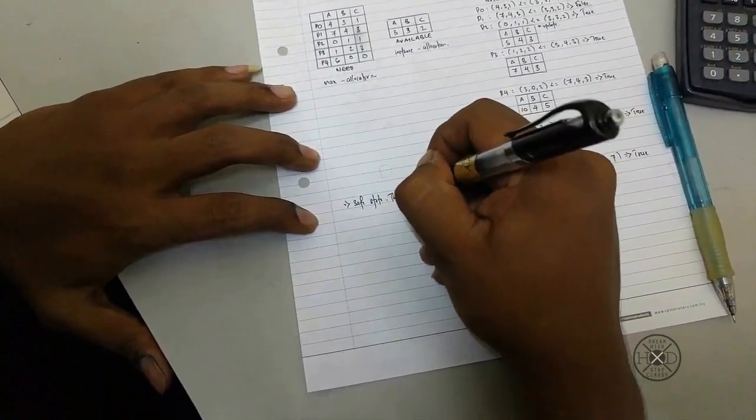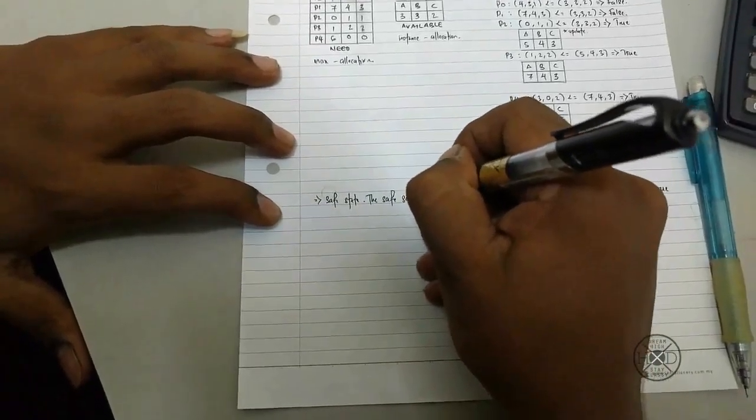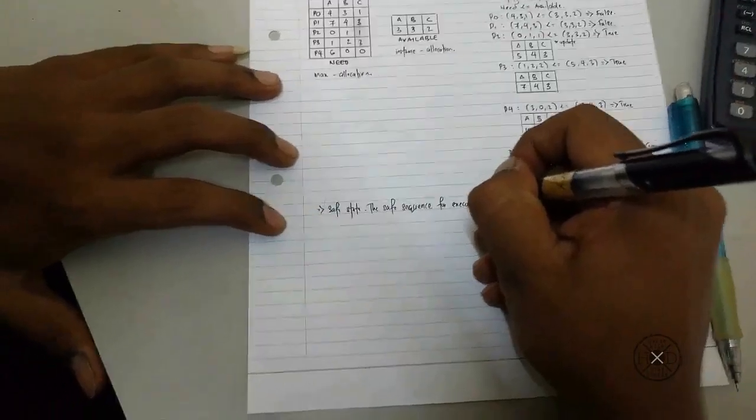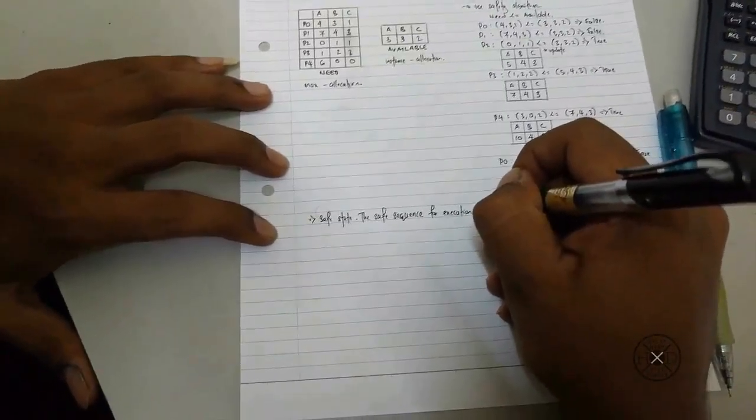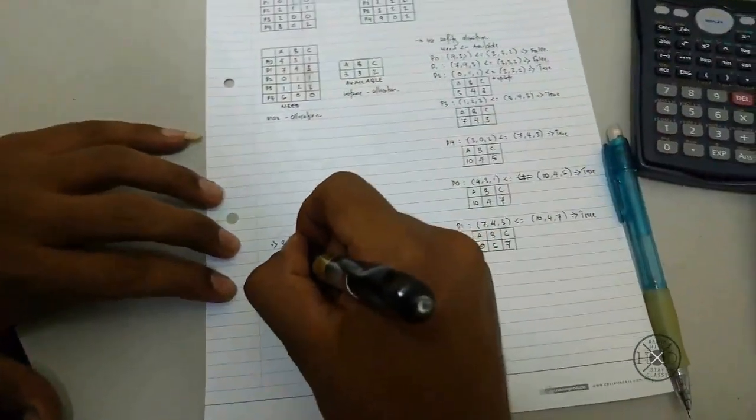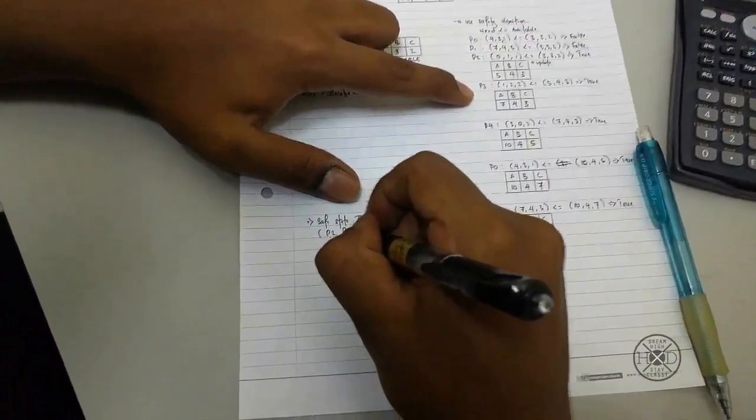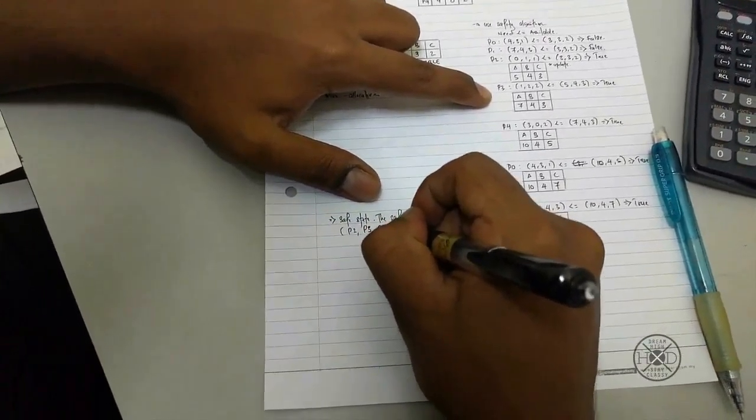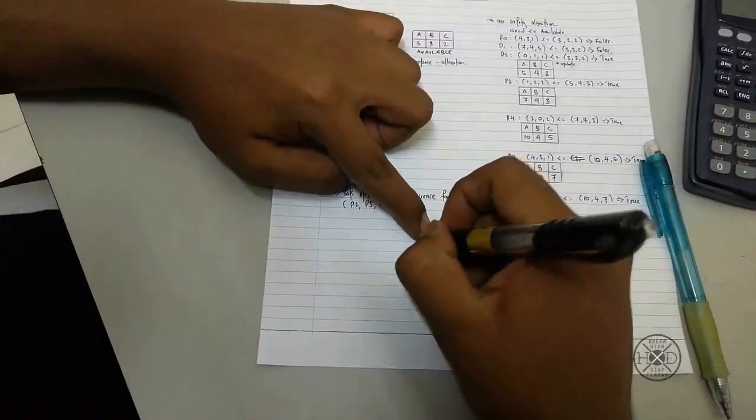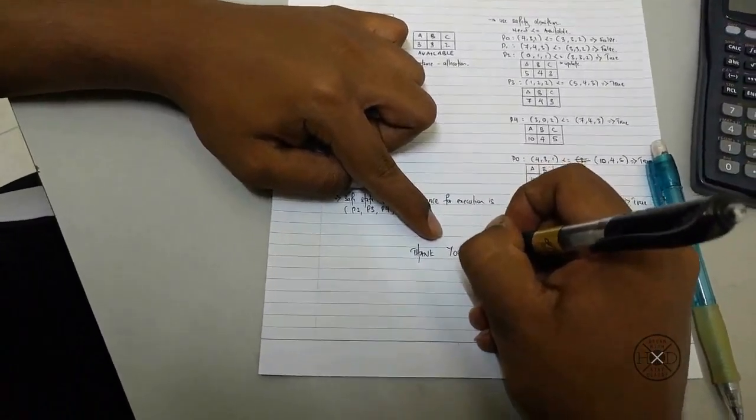The safe sequence, we have to follow up which is true. So the first one will be process 2, and process 3, process 4, process 0, and process 1. Success. Thank you.